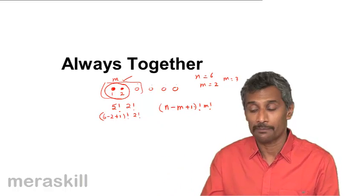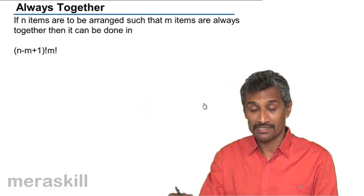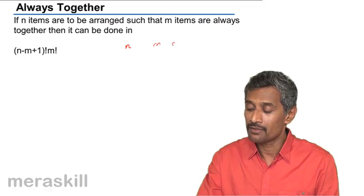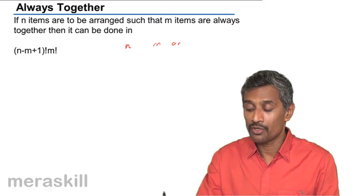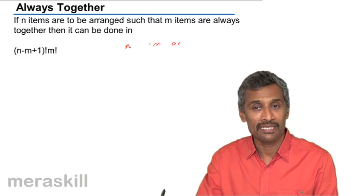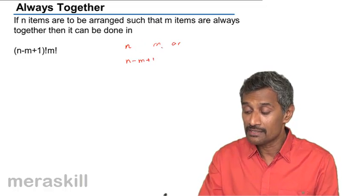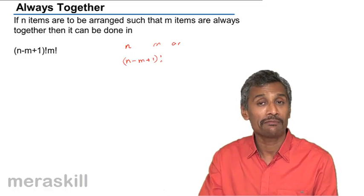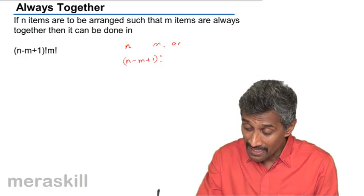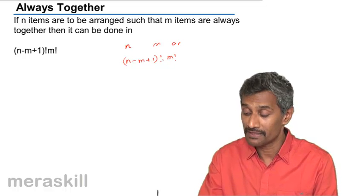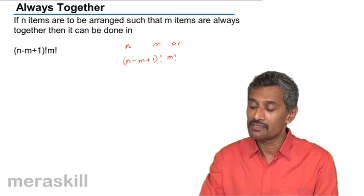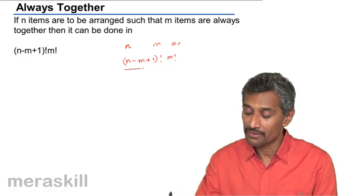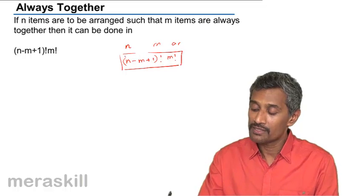So ultimately the formula is n minus m plus one factorial into m factorial. These are the kinds of questions we'll be taking up: whenever a certain number of items in any arrangement are always together, how many such arrangements are possible? If n items are to be arranged such that m items are always together, it can be done in n minus m plus one factorial into m factorial ways. This is the formula for this kind of situation.